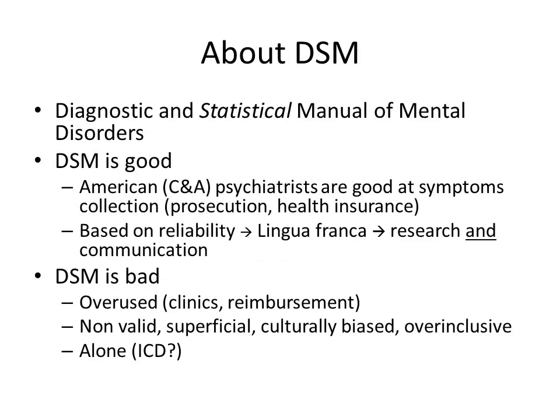DSM stands for Diagnostic and Statistical Manual of Mental Disorder. There is the word 'statistics' in DSM, and at the very beginning the DSM was designed to do statistics. Because if you want to do public health, you have to do statistics — you have to know how many patients there are in a country, how many psychiatrists you need, how many hospitalizations you need. So at the middle of the 20th century in the United States, it was decided to do statistics with mental disorders, and there was a need for a manual with clear-cut definitions.